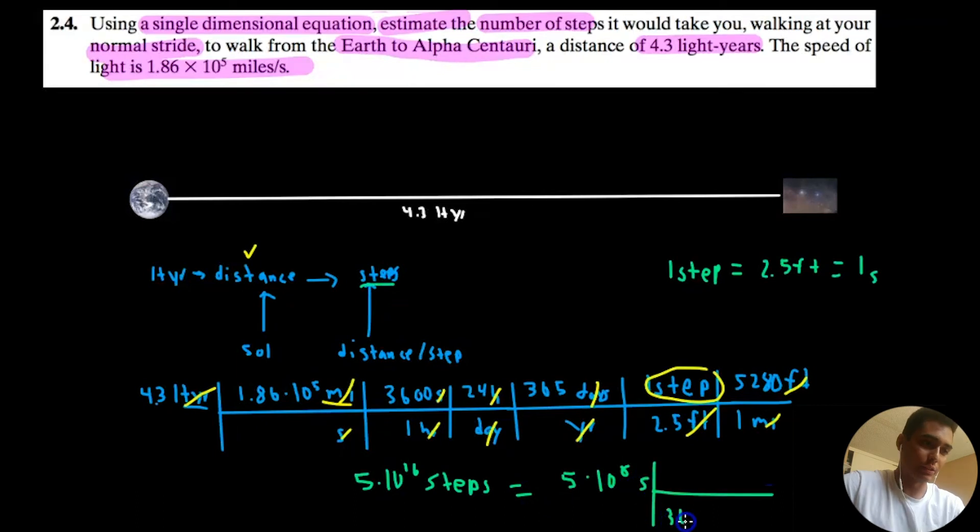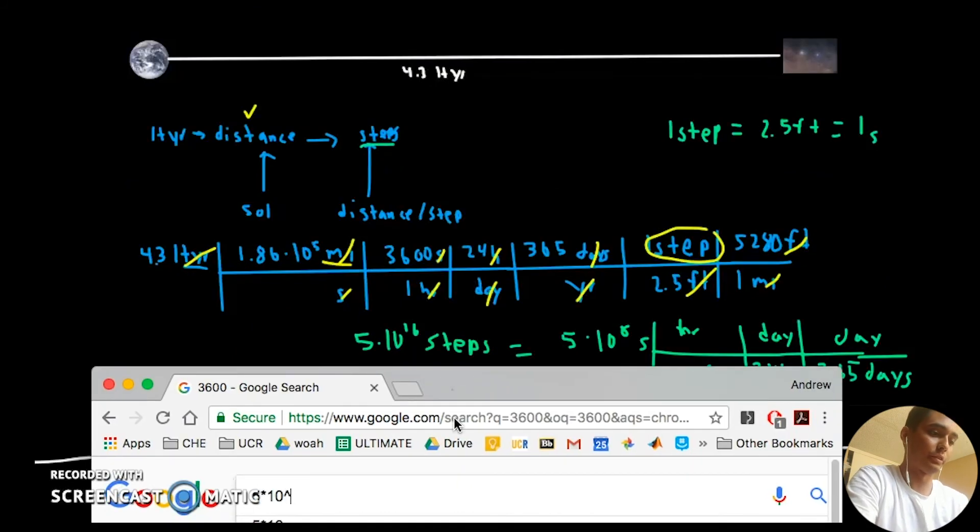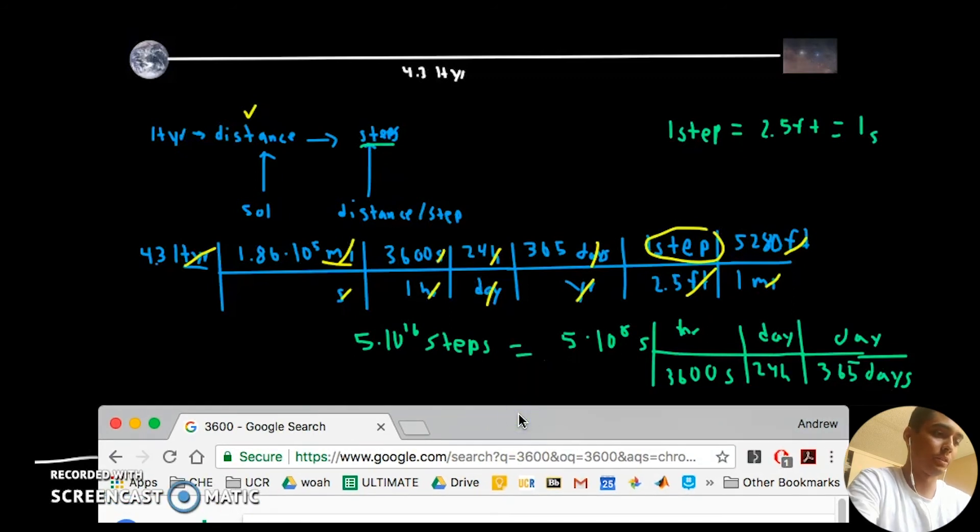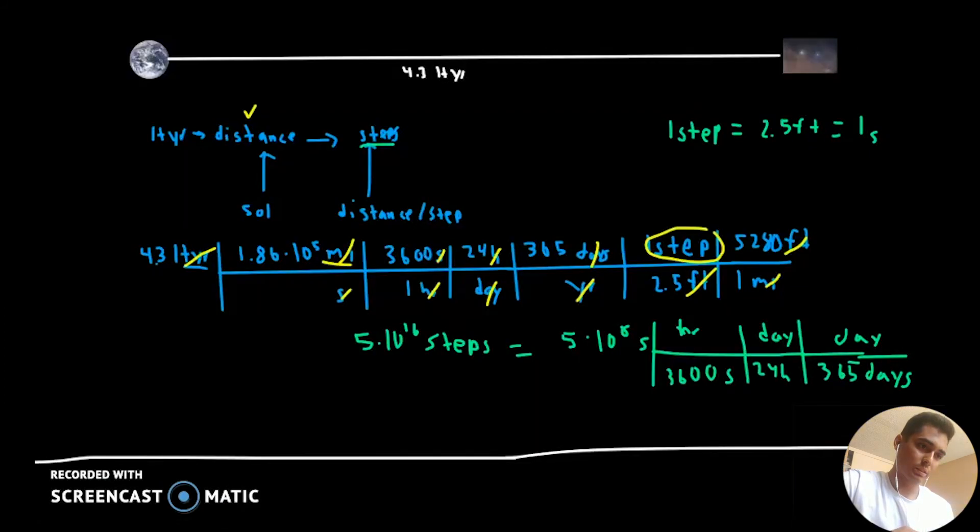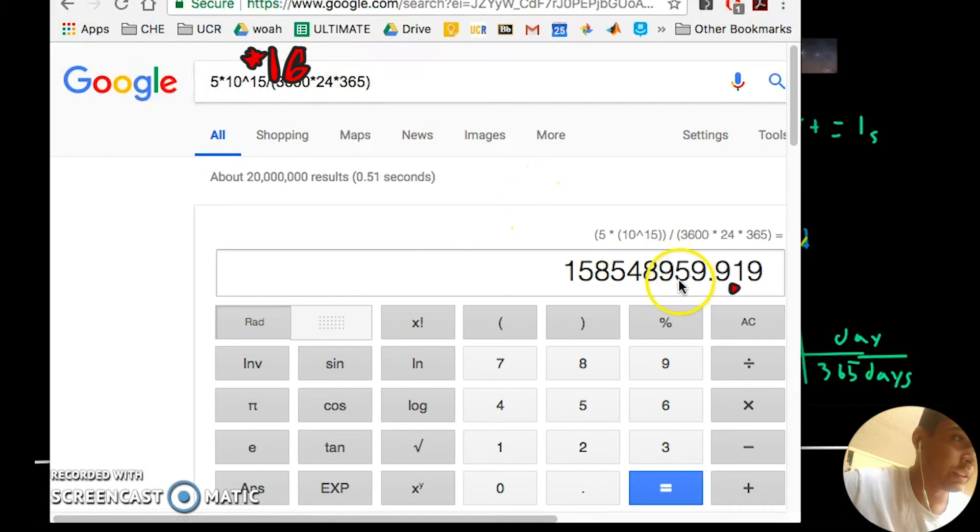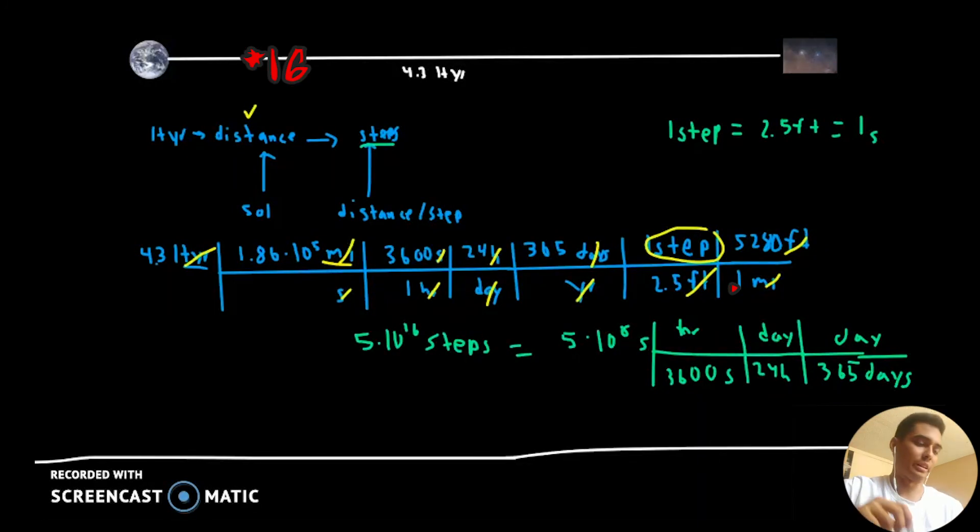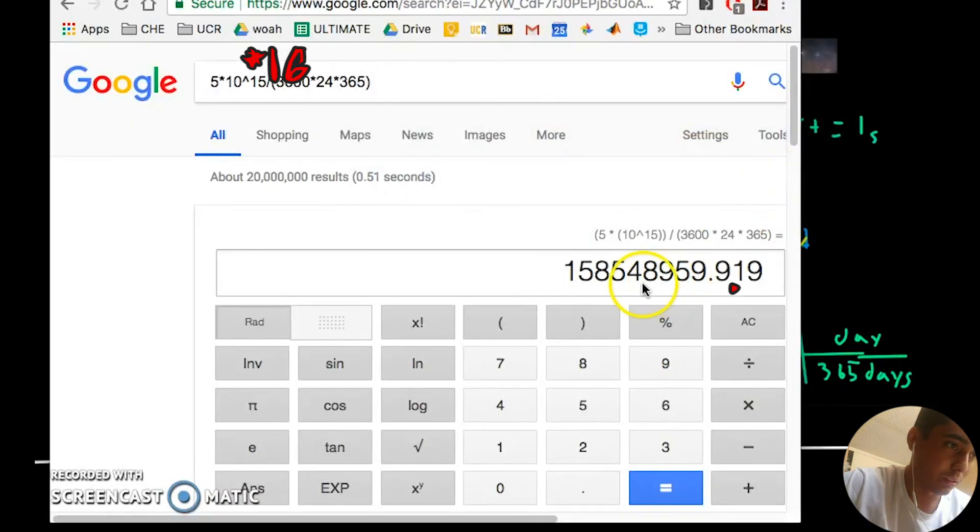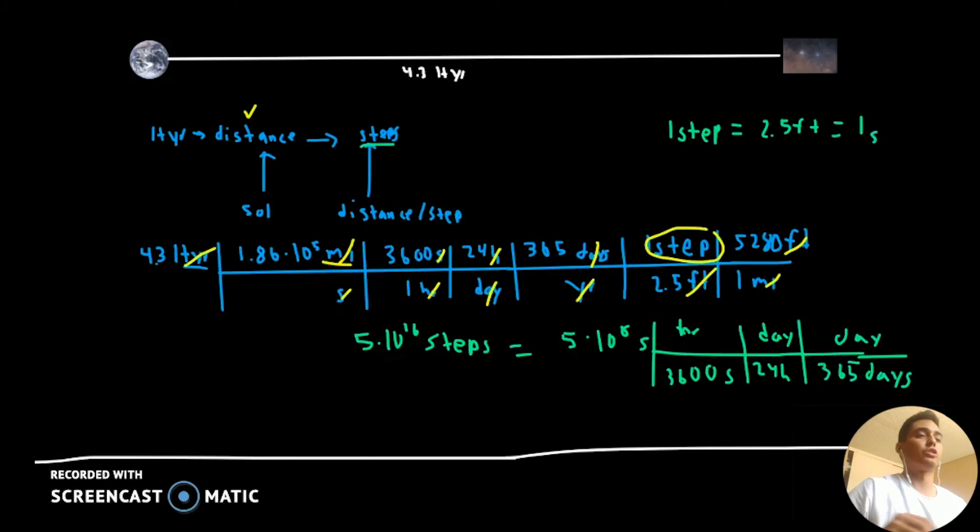Seconds. And let's see how long this would be. 3600 seconds. Seconds to year. Per hour. 24 hours per day. And 365 days per year. So, 5 times 10 to the 16 steps divided by 3600 times 24 times 365. So, it would take... Let's find out. Oh, times 10 to the 16. It would take... Oh, golly! A large number of years. Very, very large number of years. So, it would take... I don't even... What is that? 158 million years to walk from here to Alpha Centauri. If that were even possible.